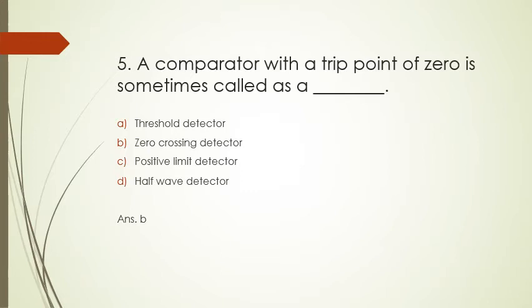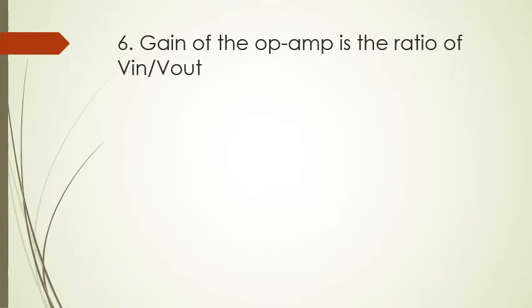Next question: gain of the op-amp is the ratio of Vin upon Vout—true, false, can't say, or none of these. Whenever we talk about the gain of op-amp, it is the ratio of output quantity upon input quantity. Here the inverse is given, so this is false. Answer B is correct.